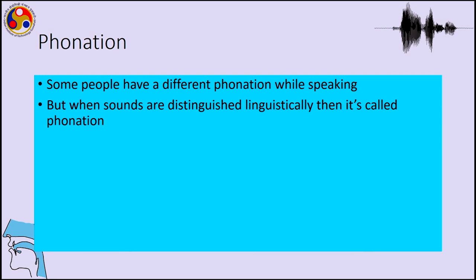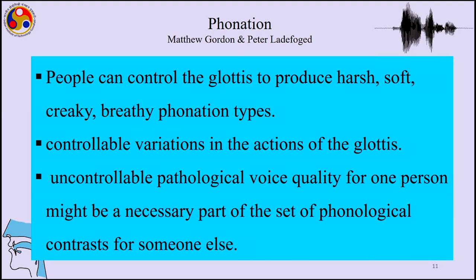Talking about phonation, some people have different phonation while speaking. You can hear that some people use their glottis to produce more breathy sounds or more creaky sounds. Those properties which can be very idiosyncratic can actually be linguistically distinguished in some languages, and when that happens that is called phonation. Most of this section on phonation is based on Gordon and Ladefoged's paper. People can control the glottis to produce harsh, soft, and different phonation types, and those are controllable variations. There can also be uncontrollable pathological voice quality, which could be a phonological contrast in some other languages.